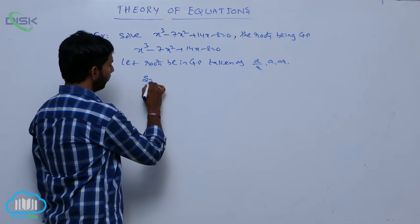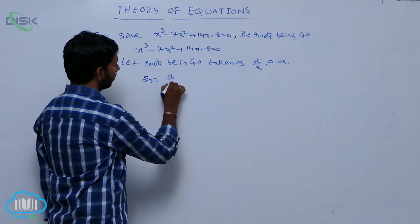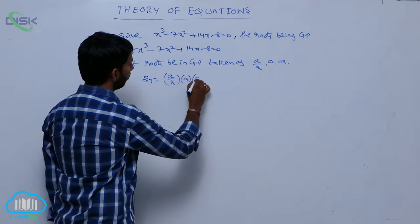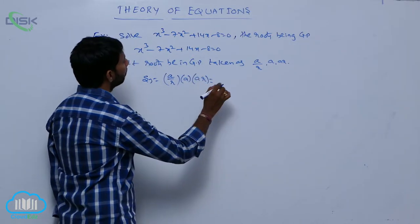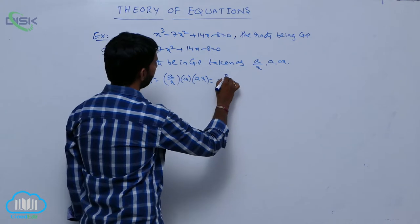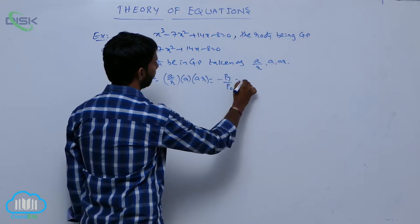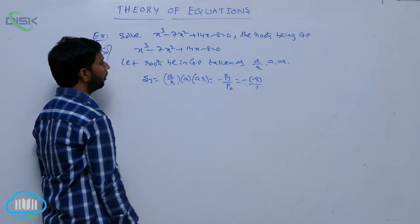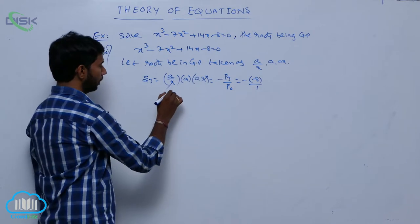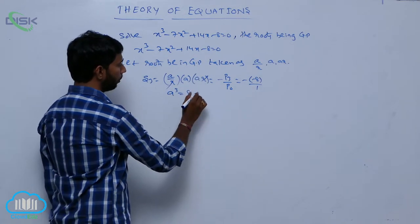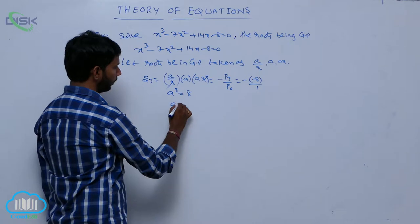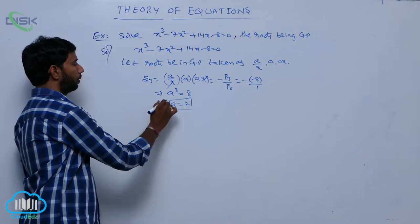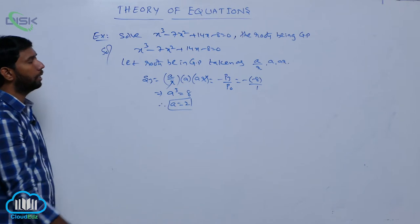First find S3. S3 means product of roots: (a/r) × a × ar = -p3/p0 = -(-8)/1 = 8. Here r gets cancelled, so a³ = 8, giving a = 2. So one of the roots is a = 2.